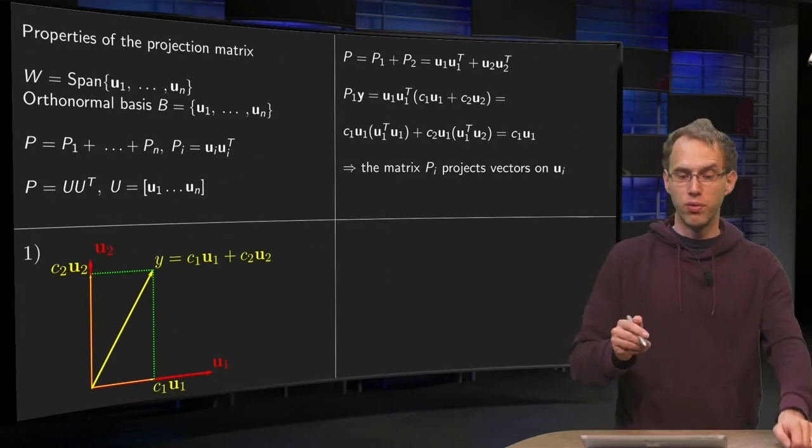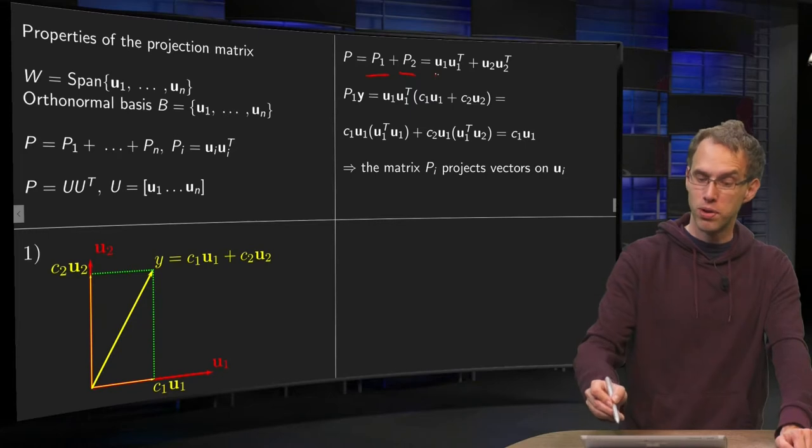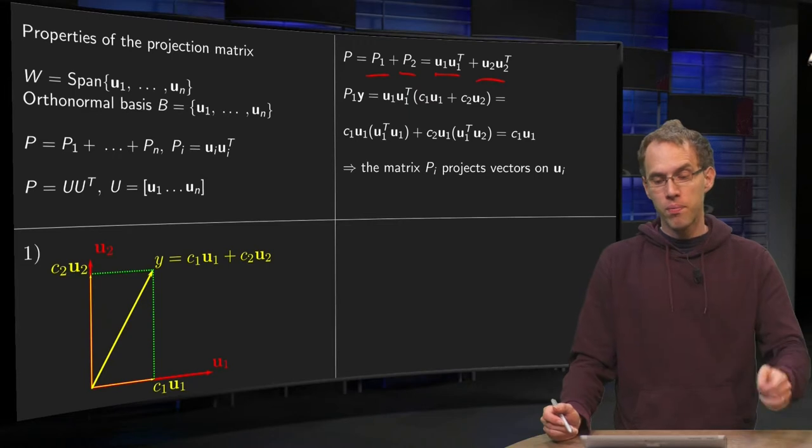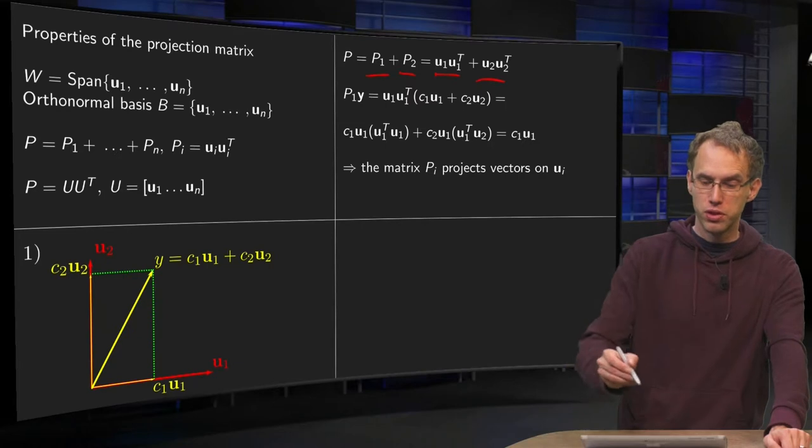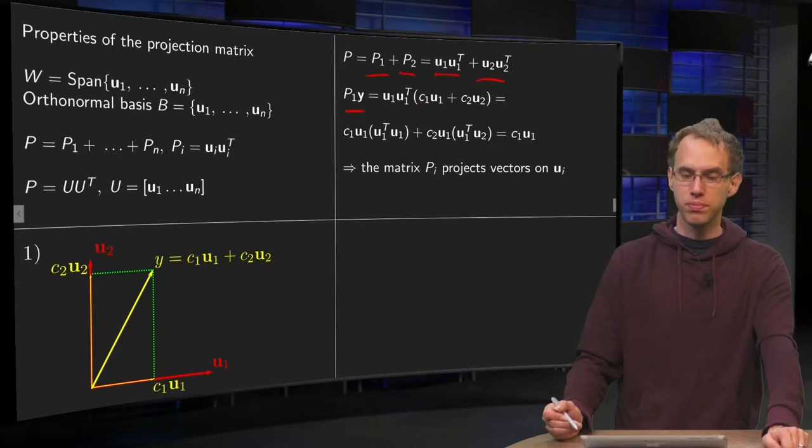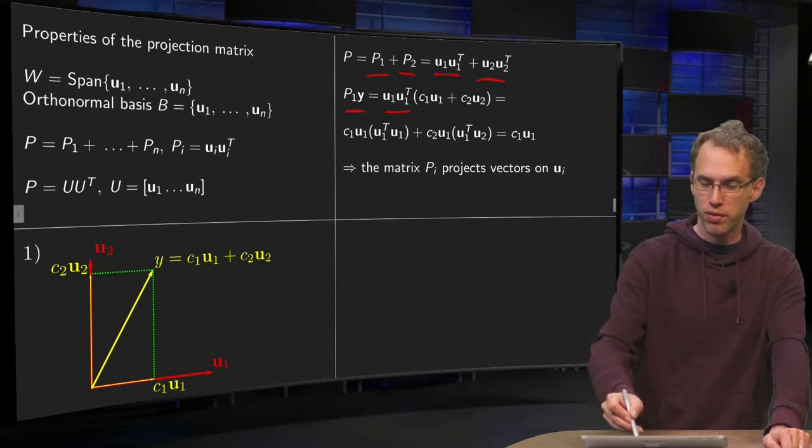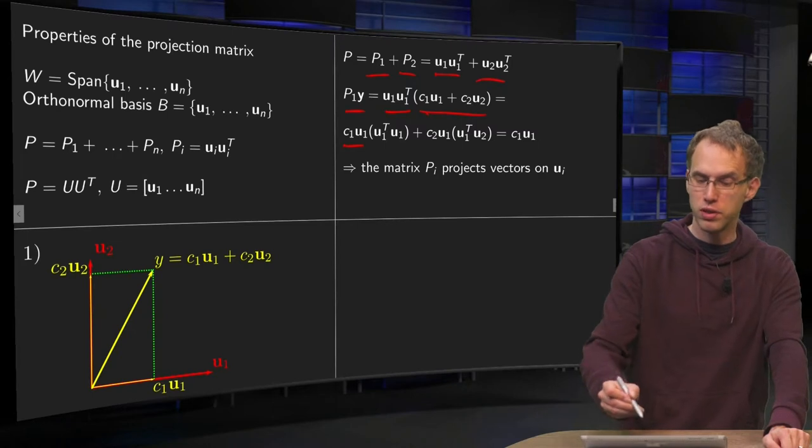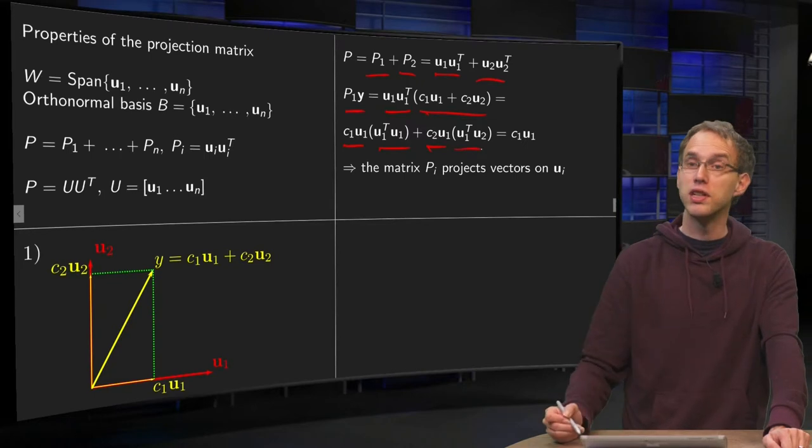Now we have only U1 and U2, so our P becomes P1 plus P2, where P1 is U1 times U1 transpose and P2 is U2 times U2 transpose. What happens if we compute, for example, P1 times Y? Then we have P1 equals U1 times U1 transpose, and here we have our Y. We can work out the product: you get C1U1, putting the brackets a bit differently, U1 transpose U1, plus C2U2 times U1 transpose times U2.